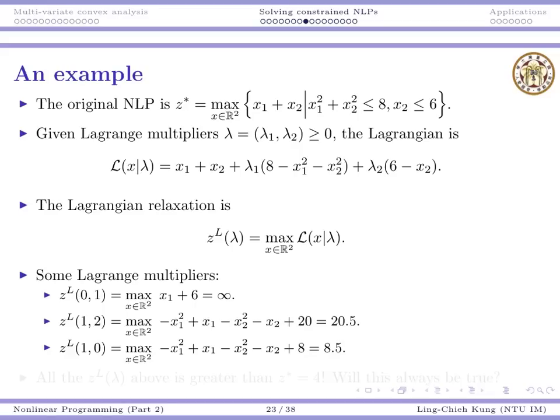One thing we found is different lambda gives us different objective values. And we also find that all these values are greater than z star, which is 4. Naturally, we want to ask whether this is true.